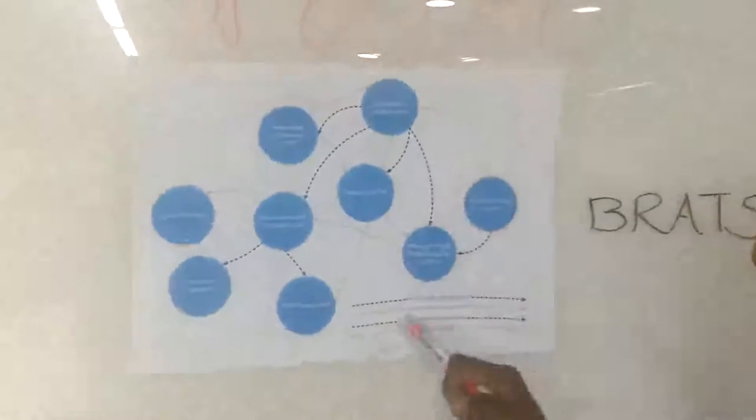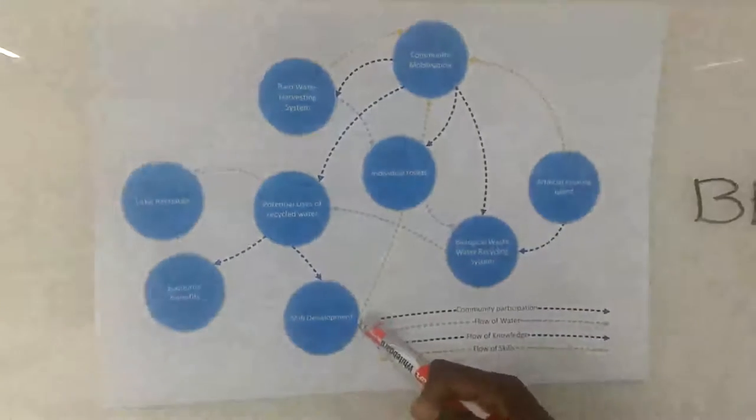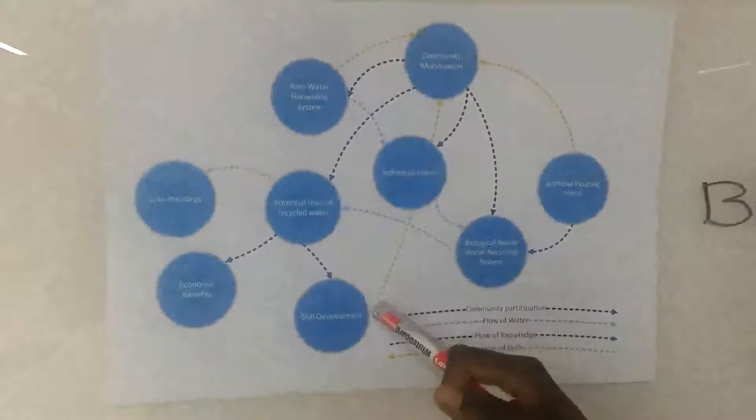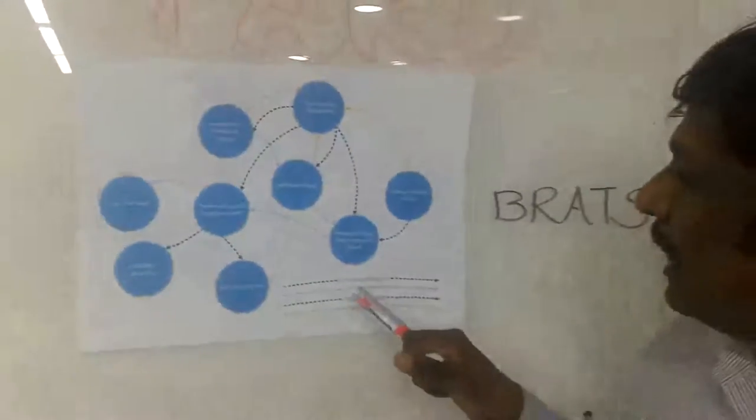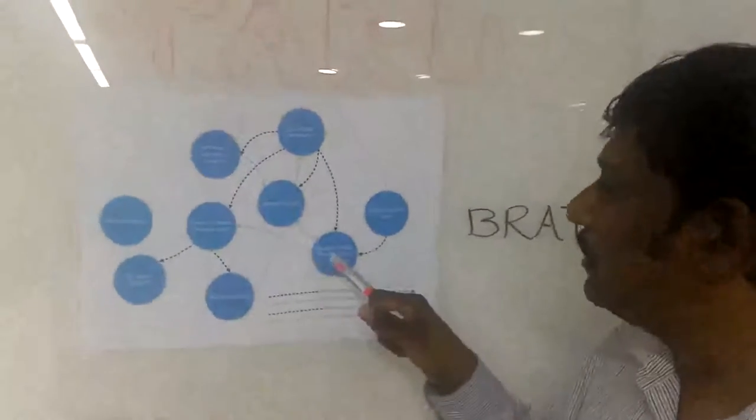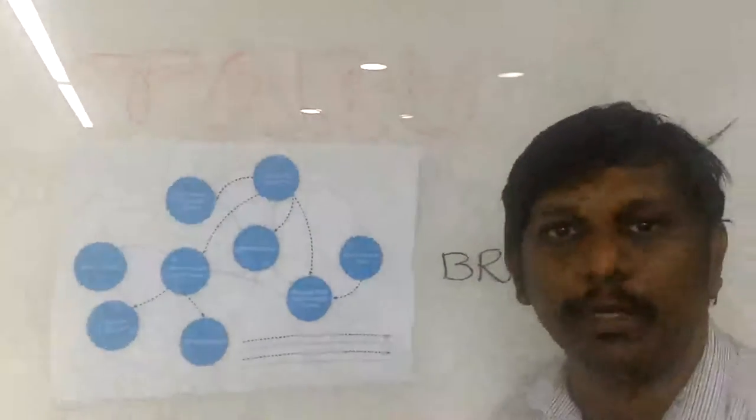Here you have different flows of information. What we can see is that there is a flow of skills once the whole project is implemented, there is a huge component of community mobilization, we are also showing the flow of water, and of course there is a flow of knowledge from different partners.